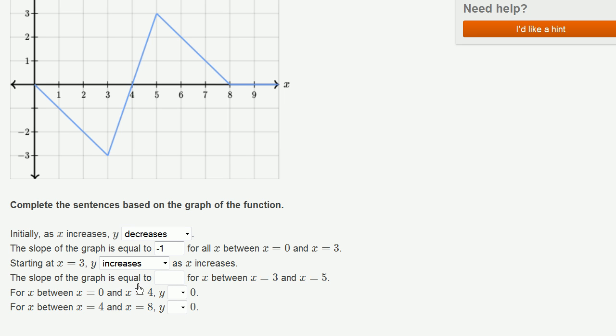The slope of the graph is equal to blank for x between 3 and 5. So when x increases by 1, y is increasing by 3. Change in y is 3, change in x is 1.